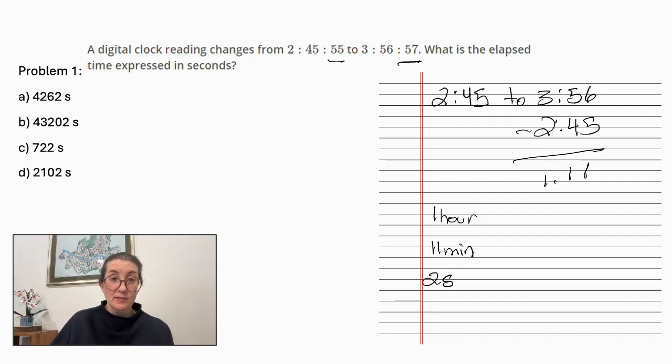So our next step is to convert to seconds. There are 60 seconds in every minute and 60 minutes in every hour. So we're going to multiply 60 by 60 and we get 3,600. 11 minutes is 11 times 60.